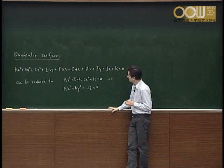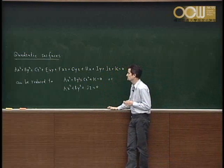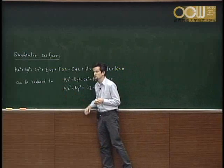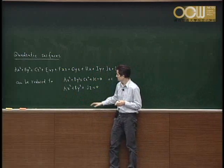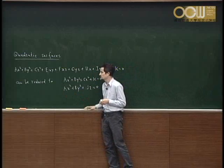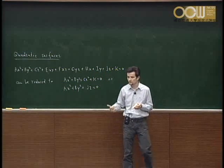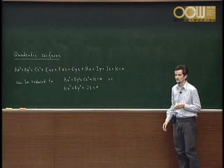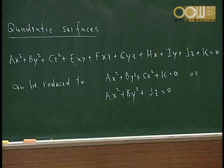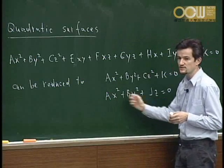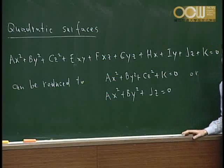Moreover, if we look at those two equations, we see that if one of the coefficients is equal to zero — for instance, j is equal to zero — then what you get is a cylinder. And we exclude cylinders from our classification. So for the second equation, we can assume that all of the coefficients a, b, j are not equal to zero.